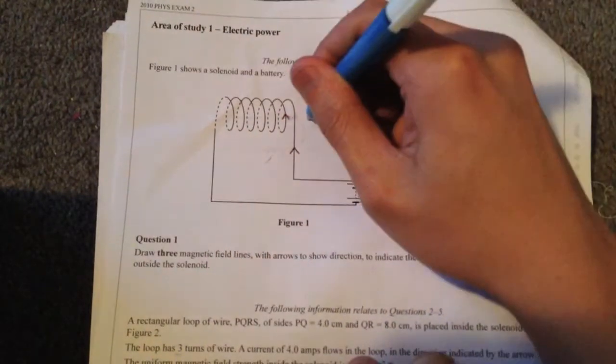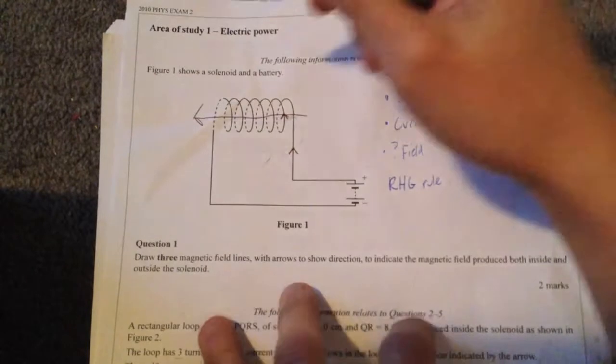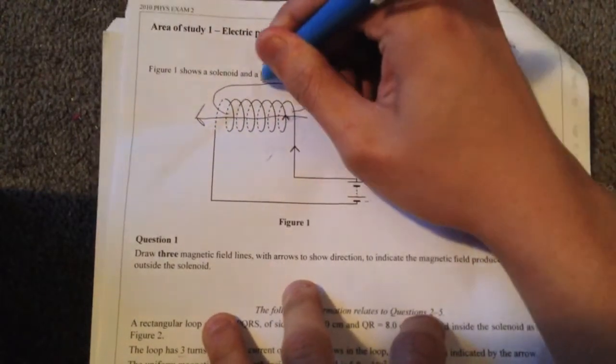So we know inside the coil the fingers are going left so the field is going left. Now the outside coil will be going in the opposite direction.